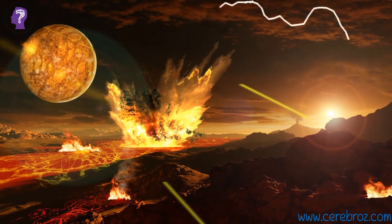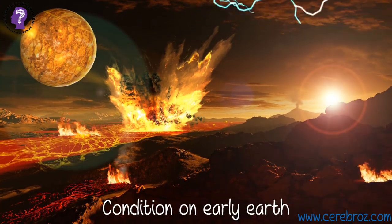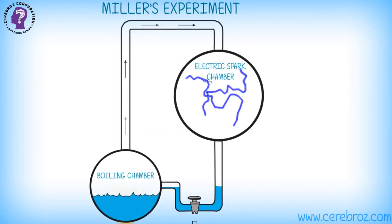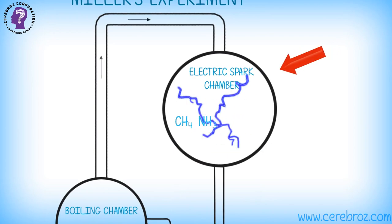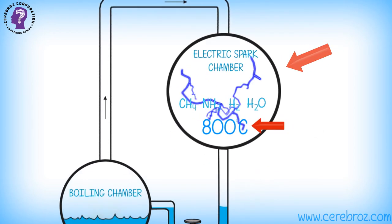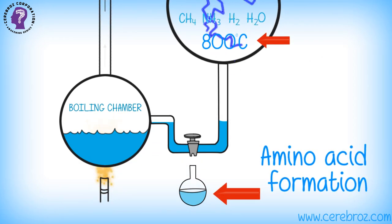To test this hypothesis, Miller at laboratory scale created similar conditions of early Earth. He set up electric discharge in a closed flask containing CH4, NH3, H2, and water vapor at 800 degrees Celsius, and observed formation of amino acids, building blocks of protein.